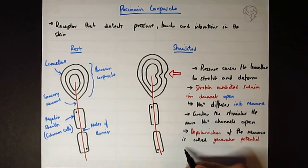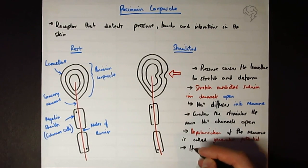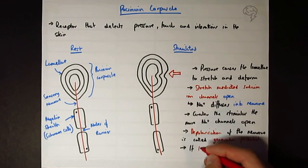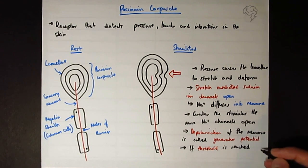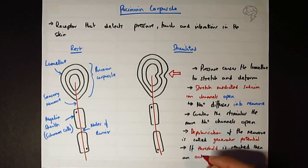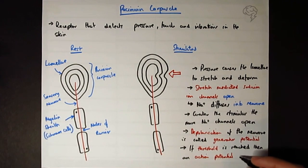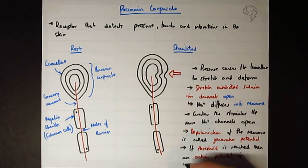So as soon as we've reached threshold, then because of the all or nothing law, we're going to get an action potential, and the action potential will be the same size. So we can say, if threshold is reached, then an action potential is initiated.